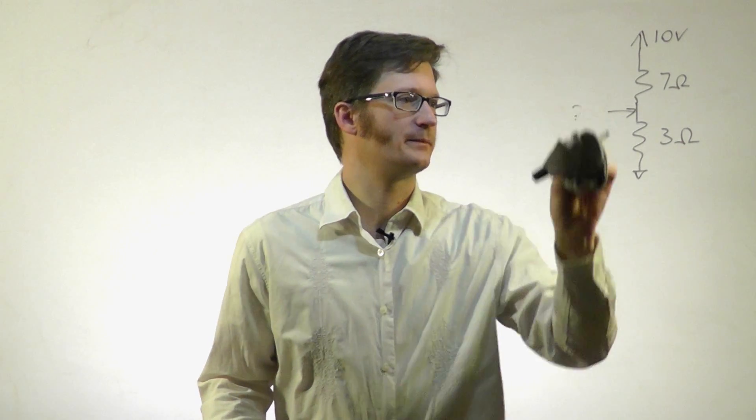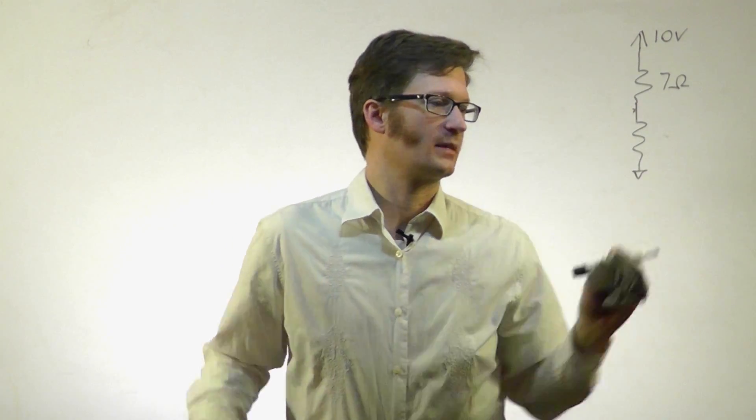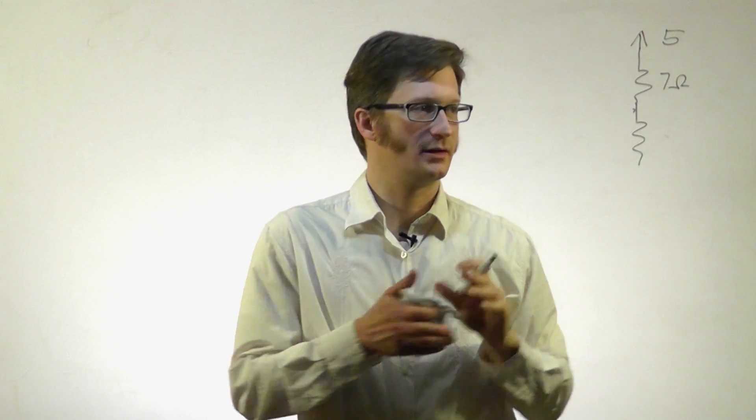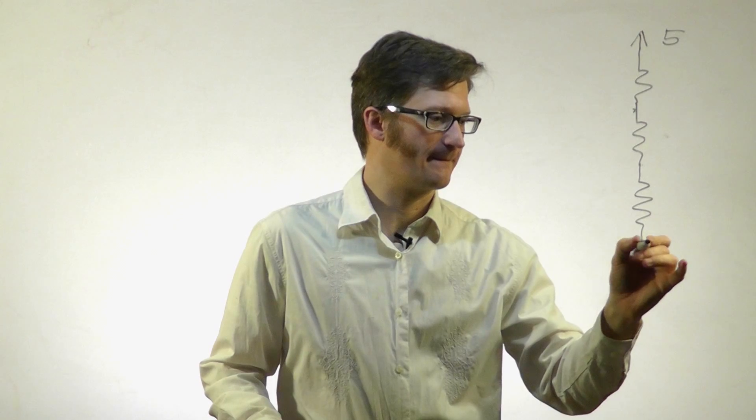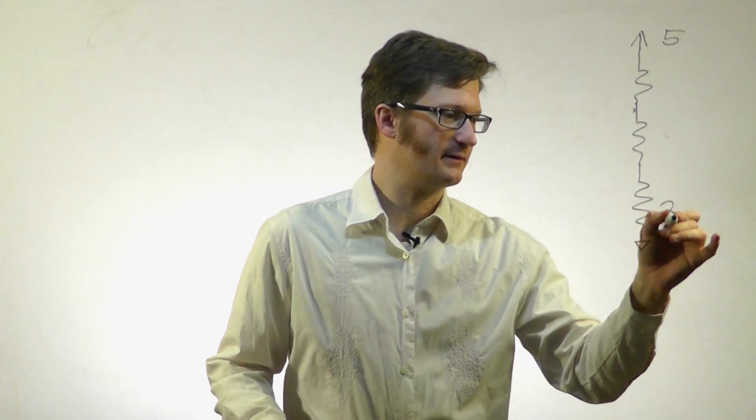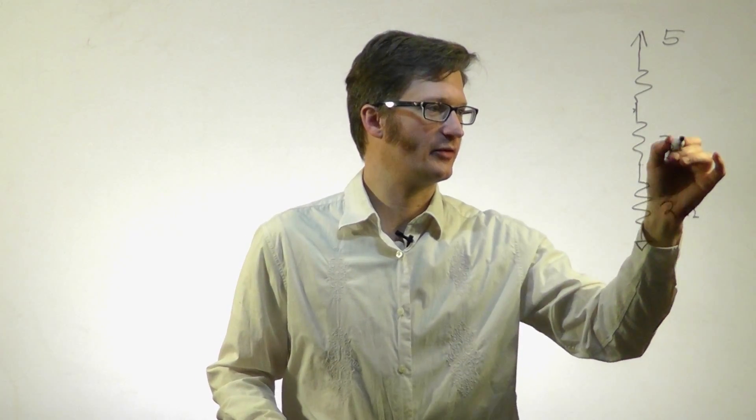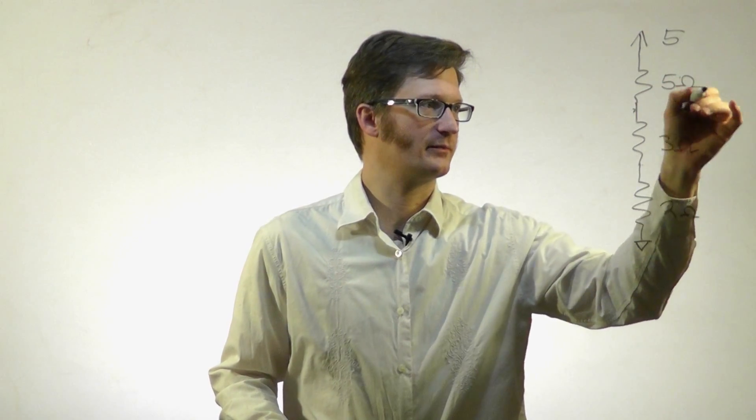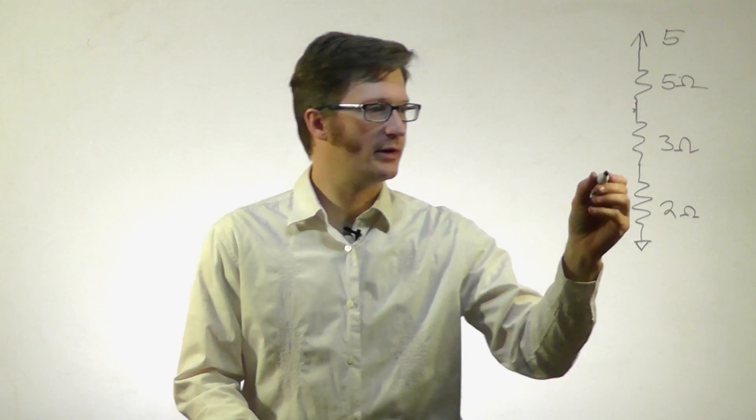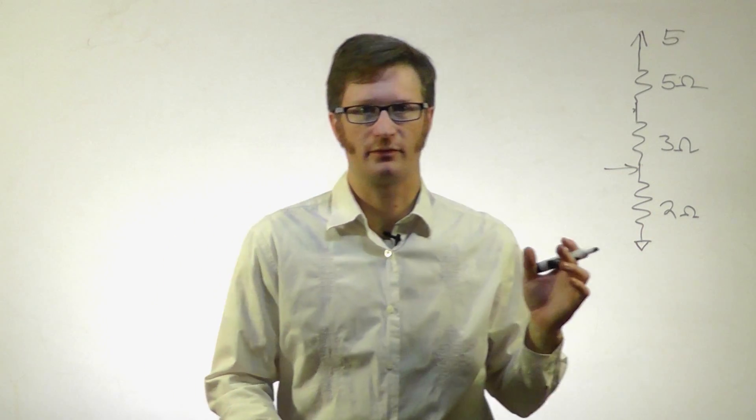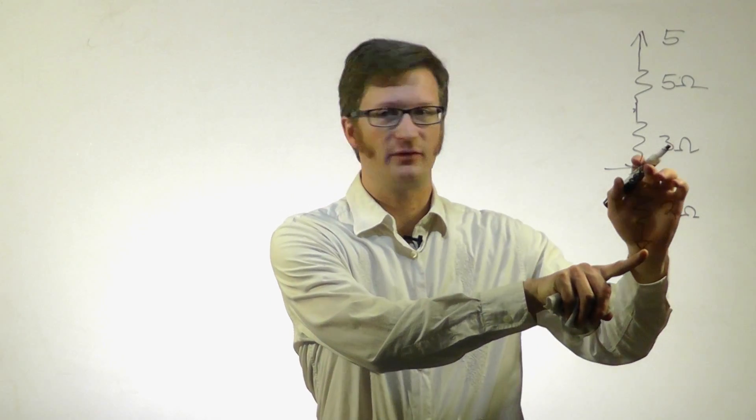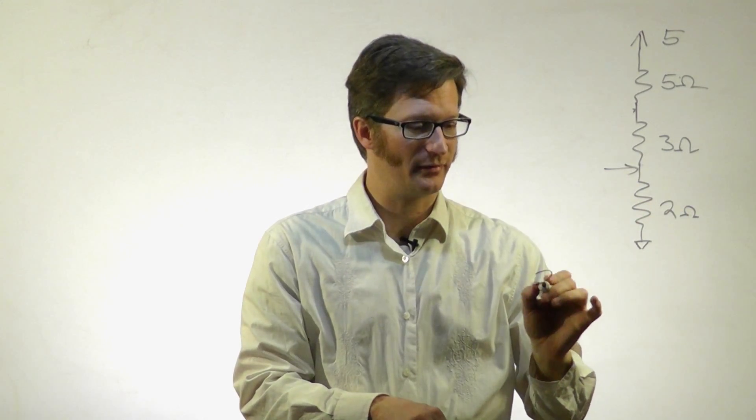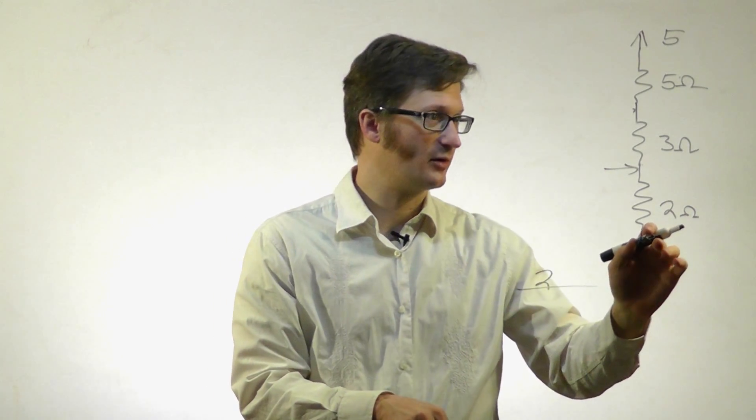Let's look at a different one. Instead of 10 volts, I have 5 volts, and we actually have 3 resistors this time: 2 ohms, 3 ohms, and 5 ohms. What is the voltage right here? The process is, I take the resistance from ground to the point I'm looking at, that goes on the top of the fraction, and then I take the total resistance.